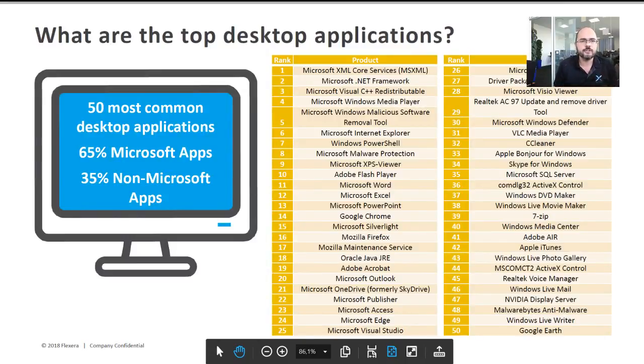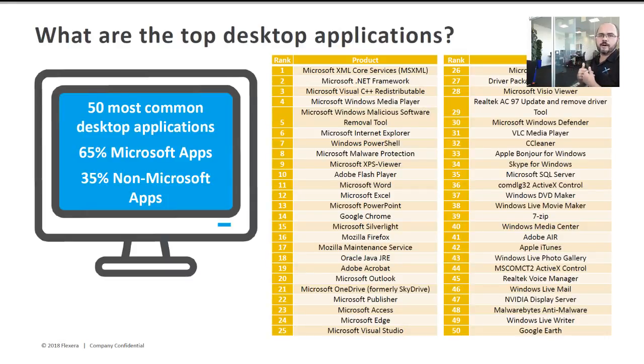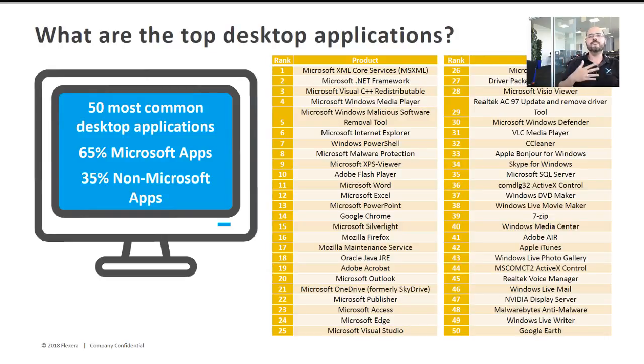You must be asking: what are Top Desktop Applications? Top Desktop Applications are the 50 most common desktop applications. We get that information from users of our product, PSI, and we look at those machines. On average, a Windows desktop would have 70 applications.